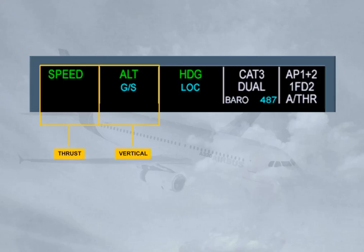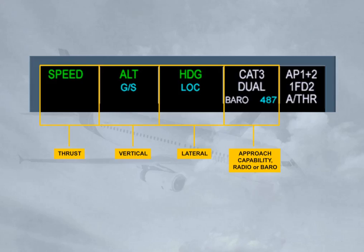The second column displays the vertical modes of the autopilot and flight directors. The third column displays the lateral modes of the autopilot and flight directors. The fourth column gives the approach capability of the autoflight system and the radio altimeter,